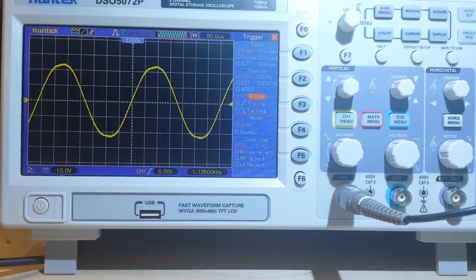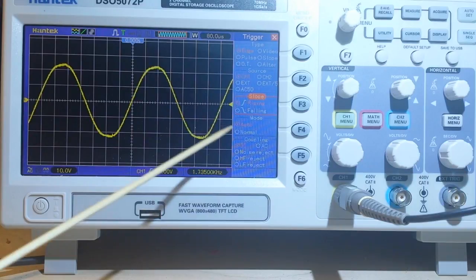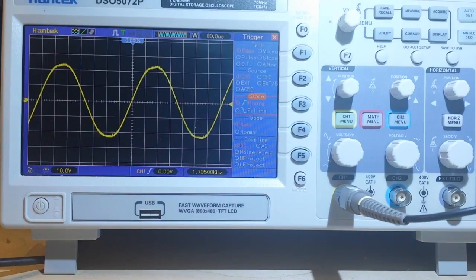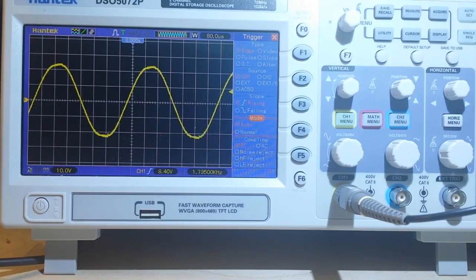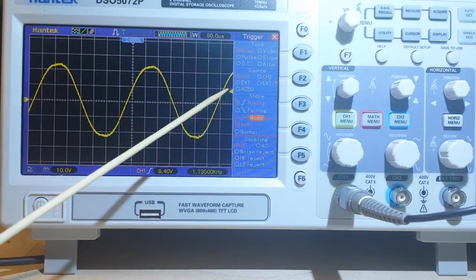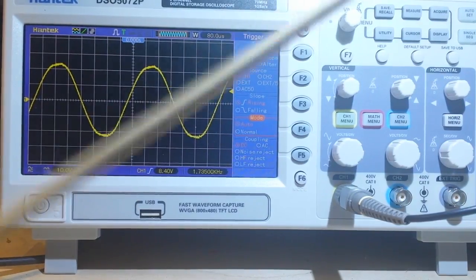Now, what's happening also is that we have two different modes, auto and normal. We are in the auto mode. And what that means is that the scope will trigger even when it's not in a triggering setting. So here is our trigger point, and you can see it is at 8.4 volts.